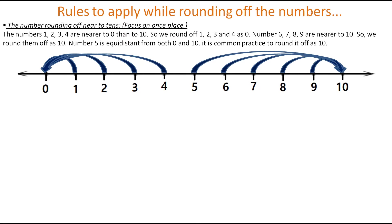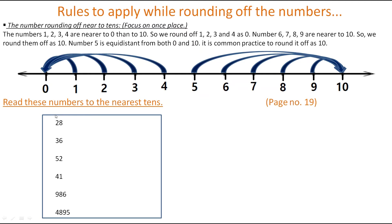Let's solve this rule using examples from page 19 — round these numbers to the nearest tens. The first number is 28. We focus on the one's place, which has 8. Since 8 rounds off to 10, the tens place increases by 1, so 28 becomes 30. In the next example, the one's place has 6, which also rounds off to 10, so the tens place increases — 36 becomes 40.